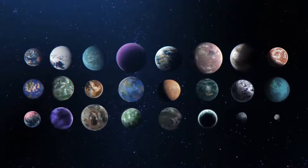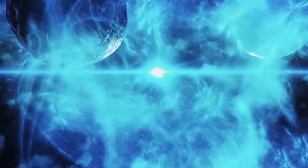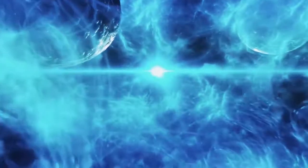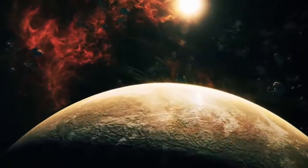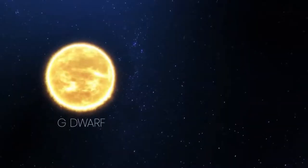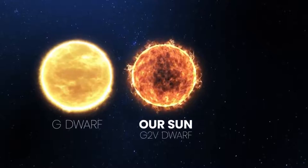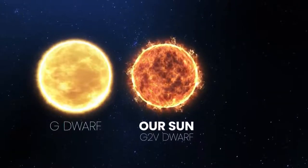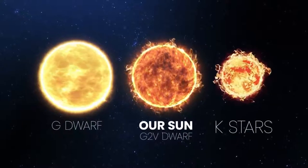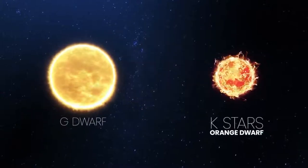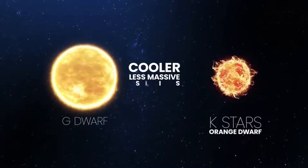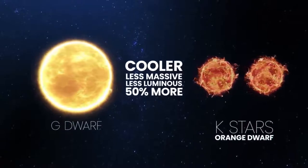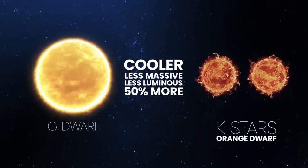These 24 superhabitable exoplanets were chosen because they have a star of the right size, lifespan, and lie in the habitable zone. Many of these orbit around G-dwarf stars similar to our Sun, but researchers also looked for exoplanets orbiting around K-stars – orange dwarf stars that are cooler, less massive, less luminous, and there are 50% more orange dwarfs than yellow dwarfs in the Milky Way.